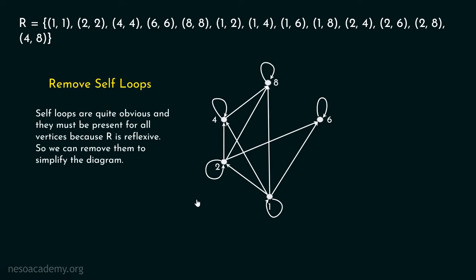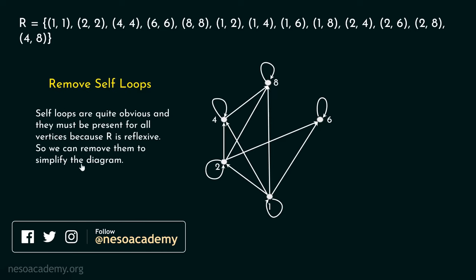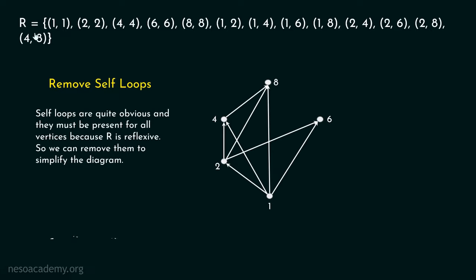We can remove self-loops. Self-loops are quite obvious and must be present for all vertices because R is reflexive — we can remove them to simplify the diagram. Right now the diagram is quite messy with so many edges. Obviously 1 is related to itself, 2 to itself, 4 to itself, 6 to itself, and 8 to itself. There is no need to draw self-loops, so I have removed them.